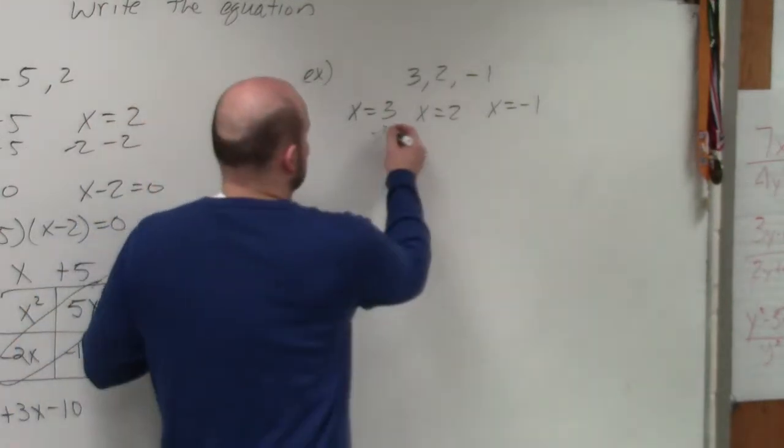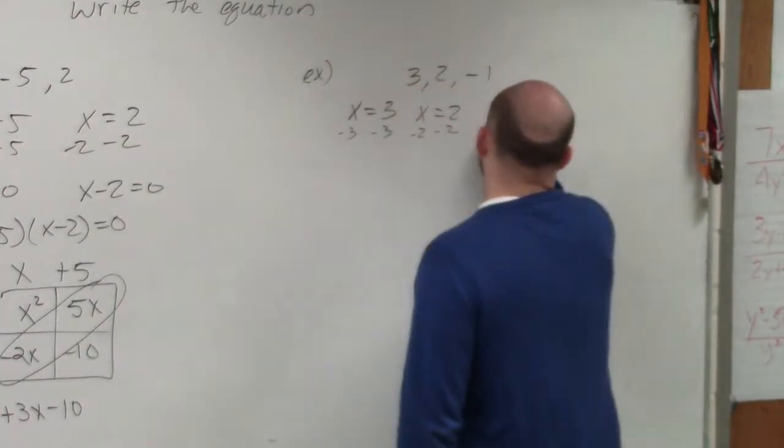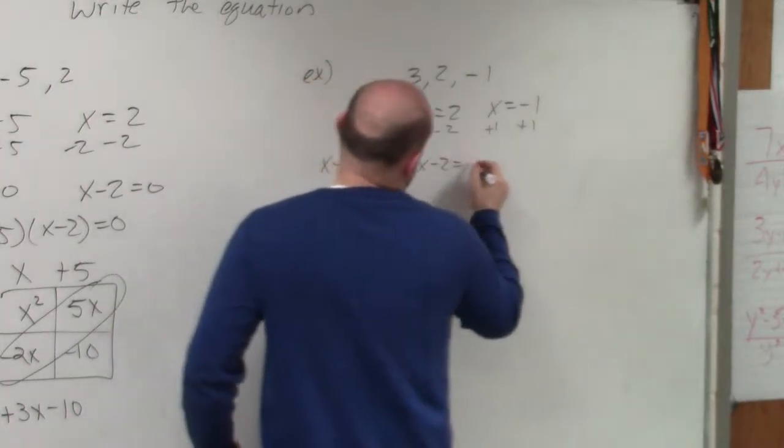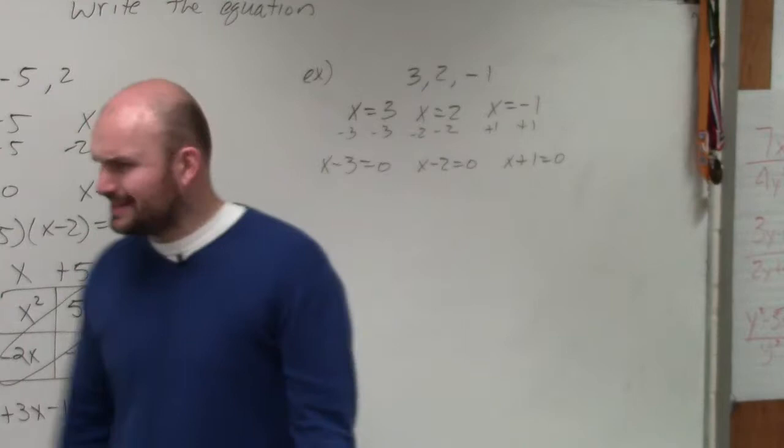The next step, setting them equal to 0, is not really a difficult step either. So you should have x minus 3 equals 0, x minus 2 equals 0, and x plus 1 equals 0, right? That's not very difficult.